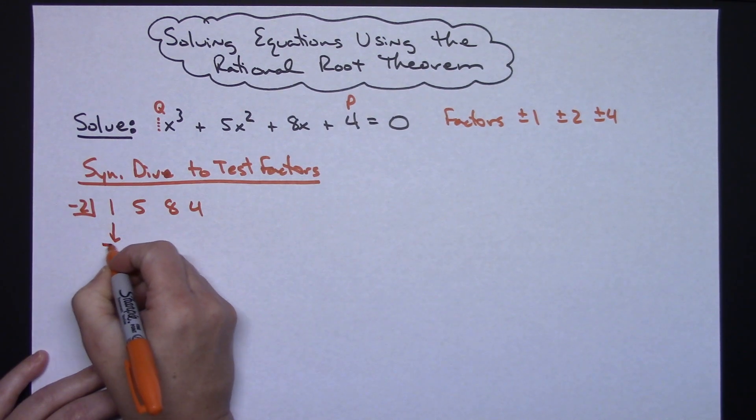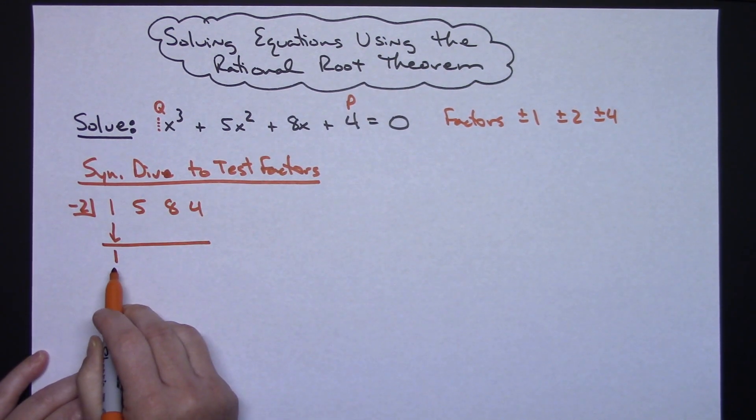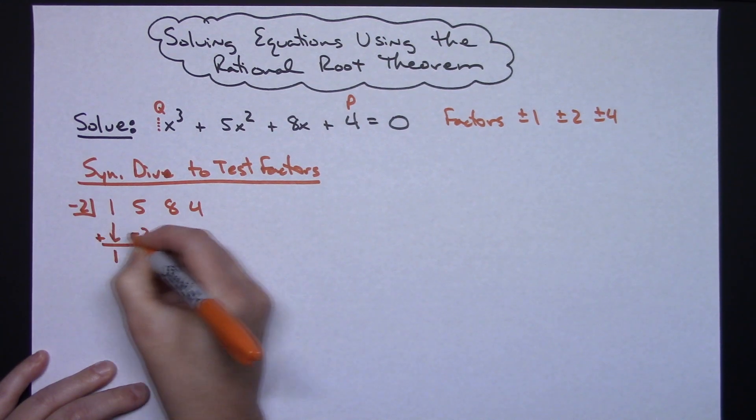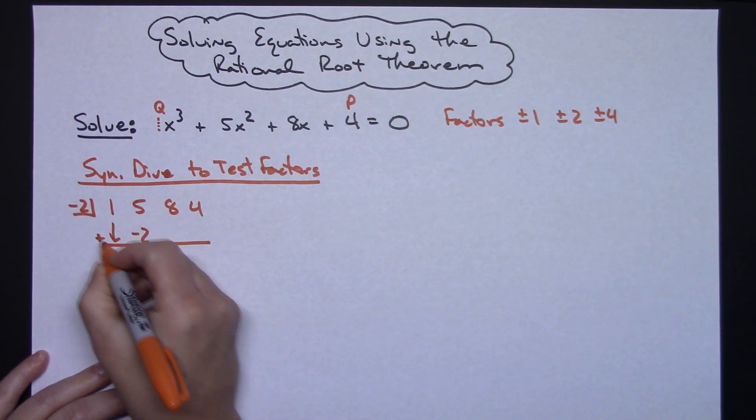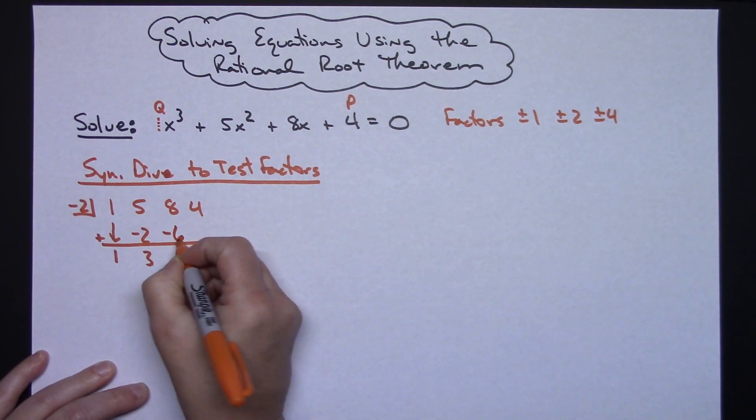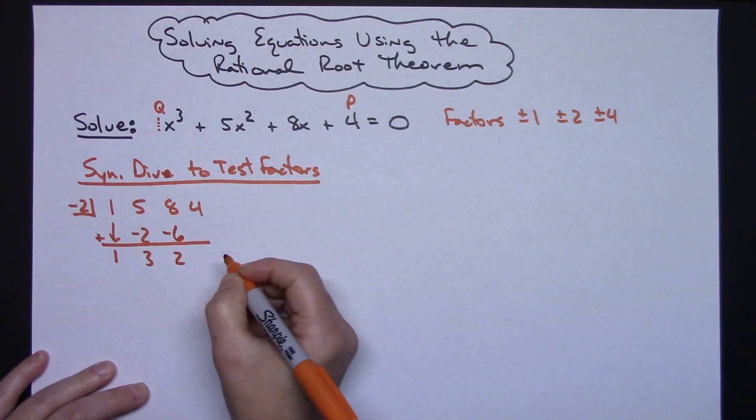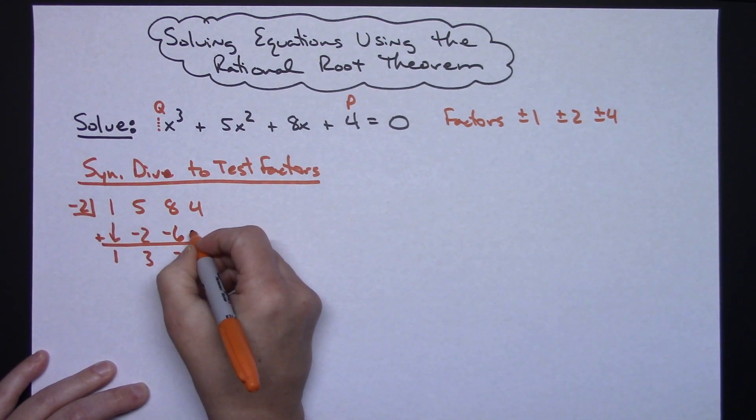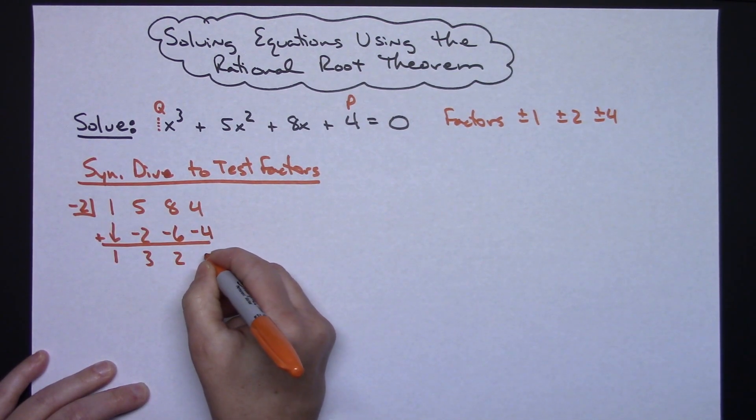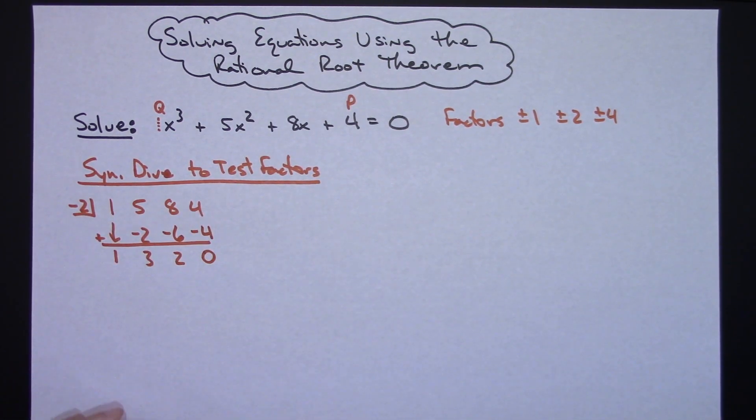If you remember this one comes straight down. And then negative 2 times 1 is going to be a negative 2. You add going down. So 5 plus a negative 2 is going to give me 3. 3 times negative 2, negative 6. Add coming down I get a 2. 2 times negative 2 is going to give me a negative 4. And then I get 0 when I add going down there.